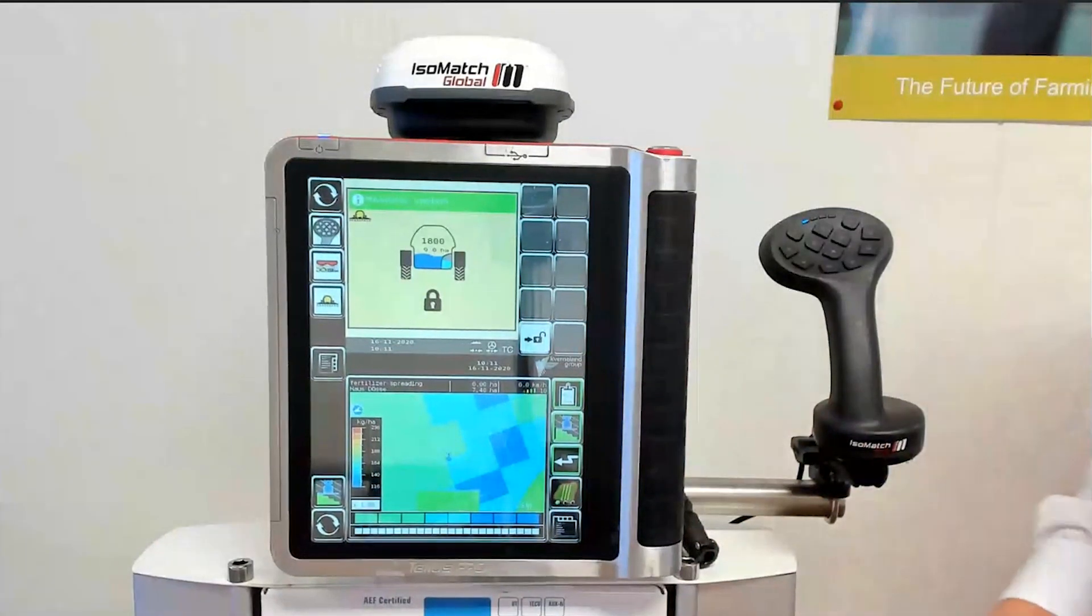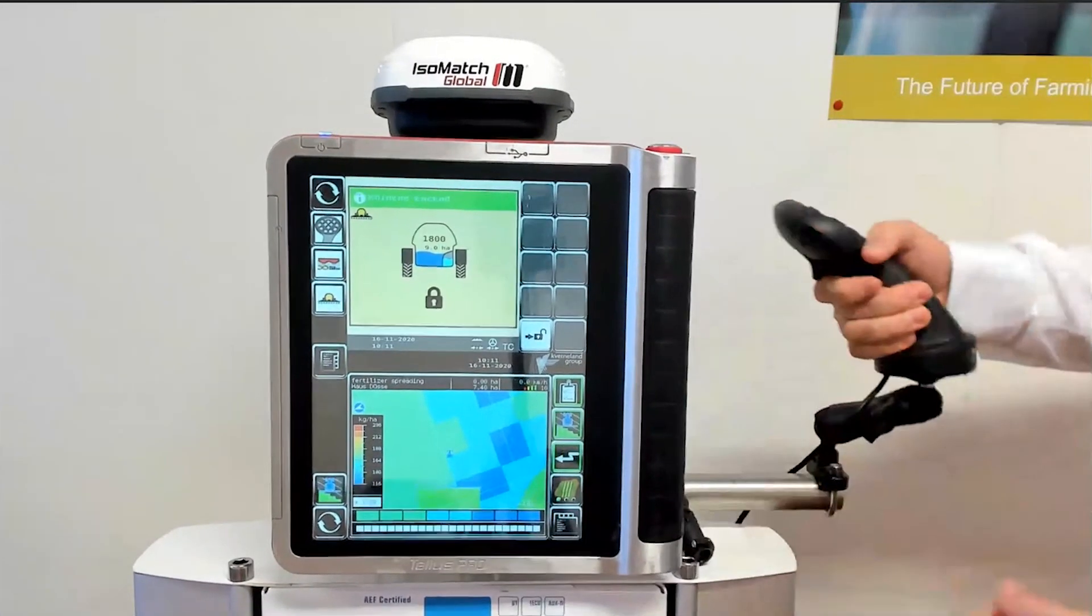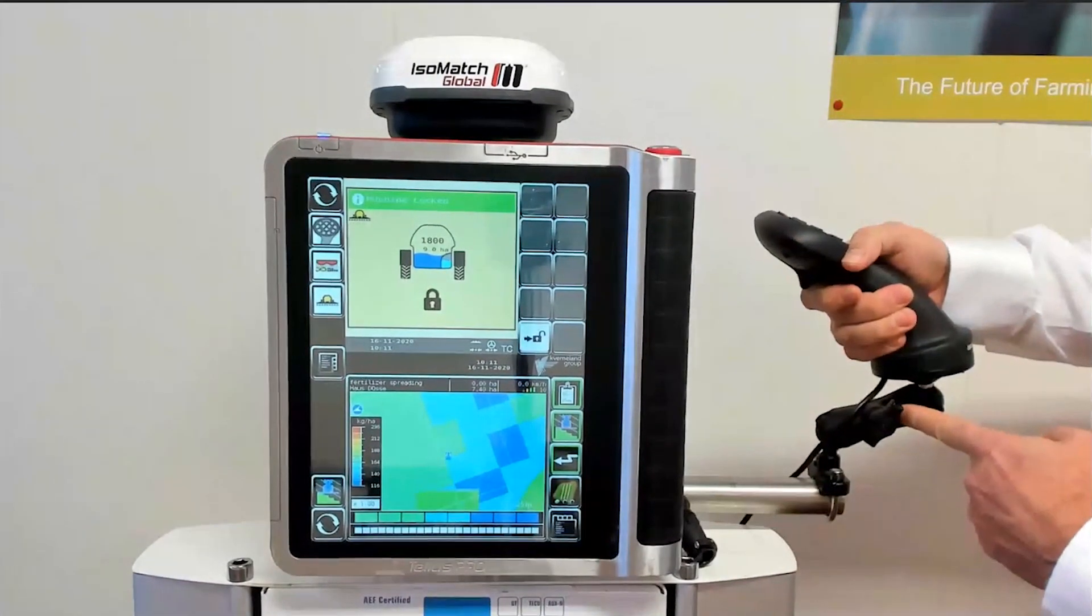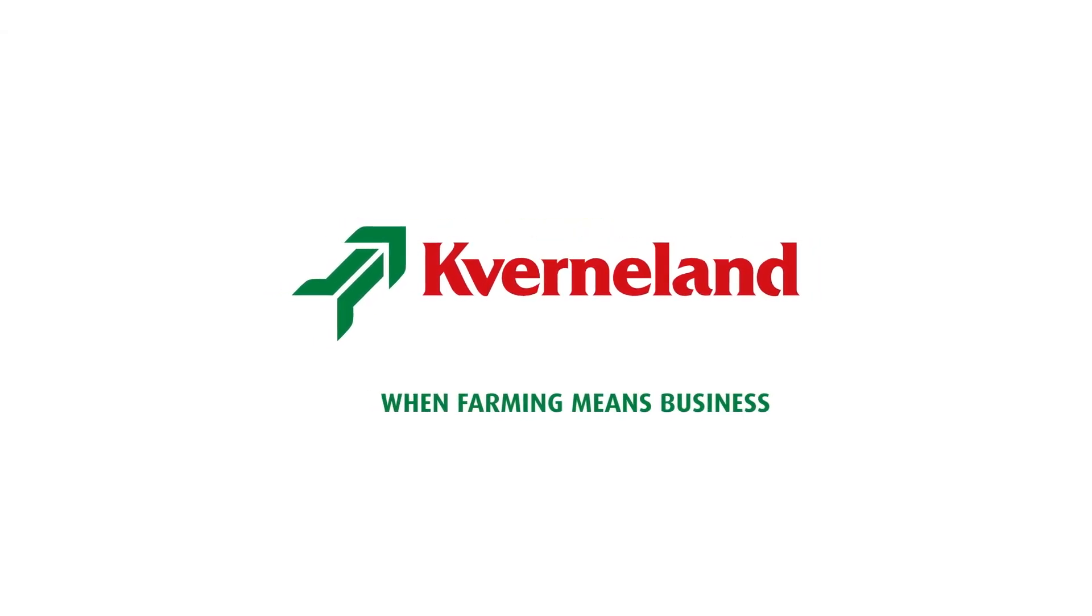The package is delivered with the IsoMatch grip itself and with a small RAM mount to fit it in the tractor cabin. When farming means business.